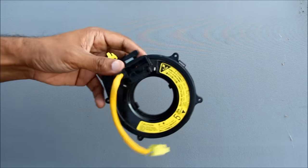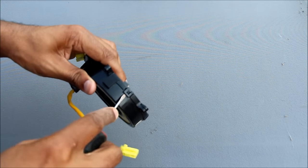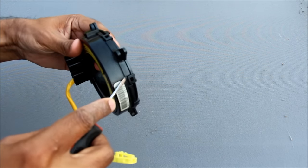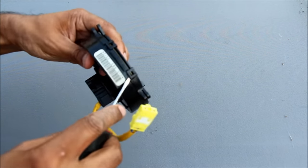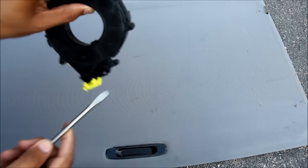So here we've got the clock spring out of the vehicle. I'm just going to use a screwdriver to open it up to see what's inside and how it works. Just lift up on these tabs and work my way around. So it appears we've got two plastic welds right here and here.